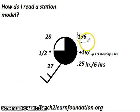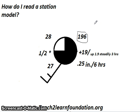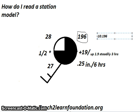This number right here is the barometric pressure, but it's actually written in shorthand, so the real barometric pressure is 1019.6 in this case. To convert the full value to the shorthand form found on a station model, all you have to do is move the decimal point over two places — 1, 2 — and remove the leading 10 or 9, depending on the number that you have.